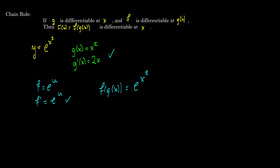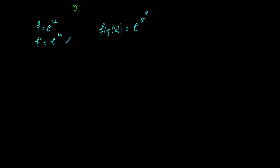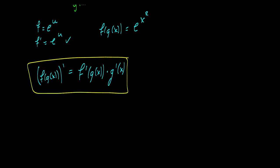Now what is the rule for differentiating? If we have a function f of g of x and we take its derivative, it is equal to f prime of g of x multiplied by g prime of x. This doesn't necessarily look straightforward, but I will show you what this means in just a second with an example.